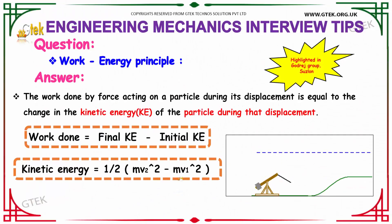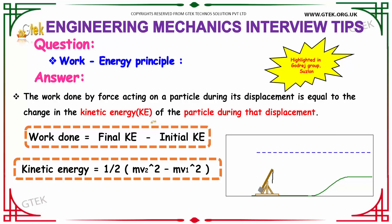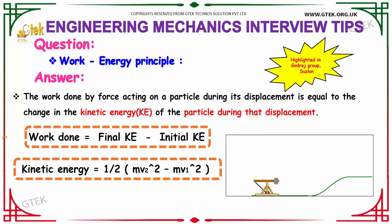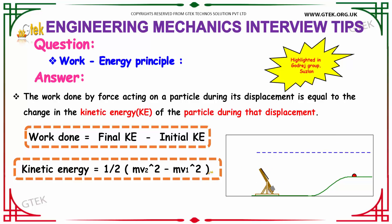The next question is the work-energy principle. The work done by a force acting on a particle during its displacement is equal to the change in kinetic energy (KE). Work done can be calculated as final kinetic energy minus initial kinetic energy. The kinetic energy can be calculated as ½mv₂² − ½mv₁², where m is mass and v is velocity.